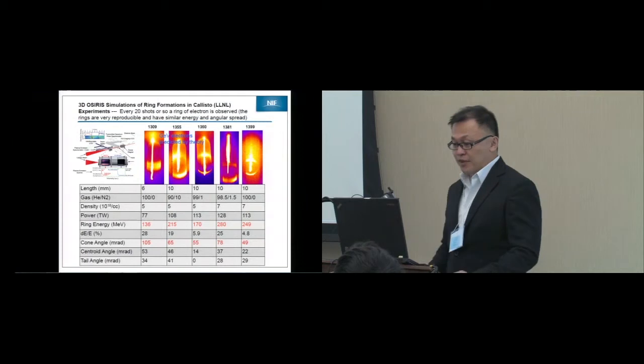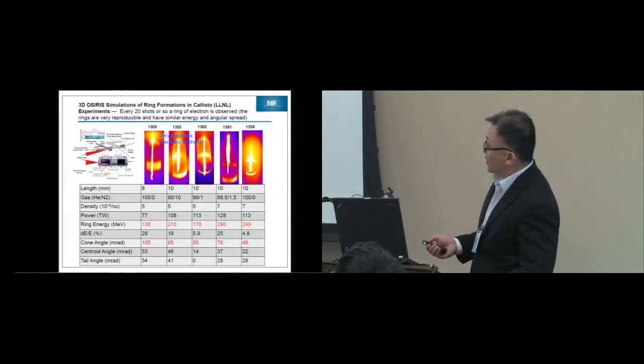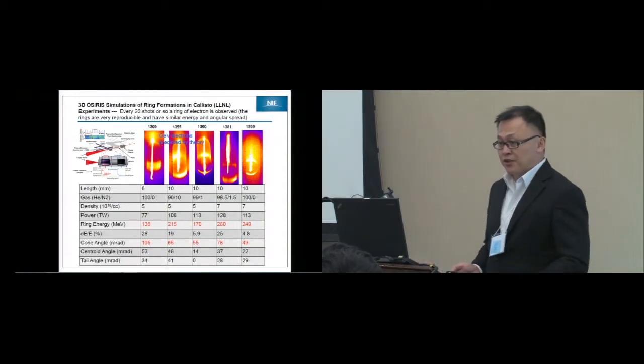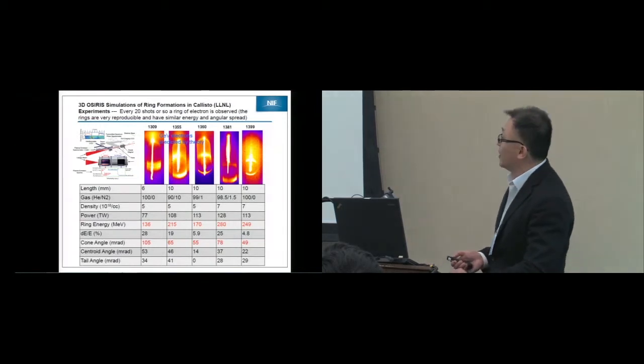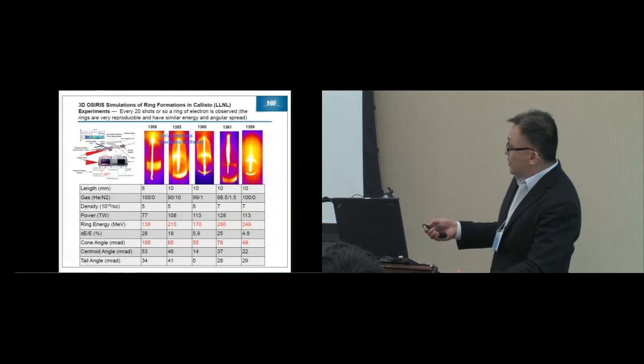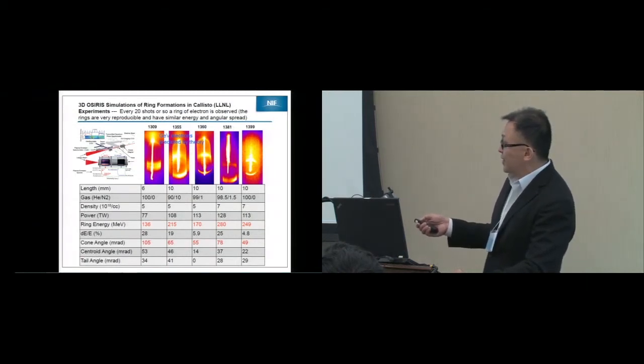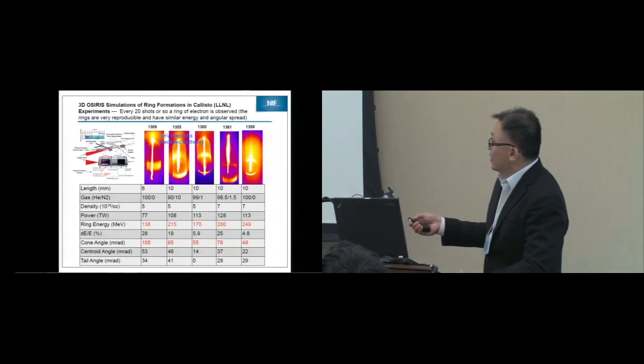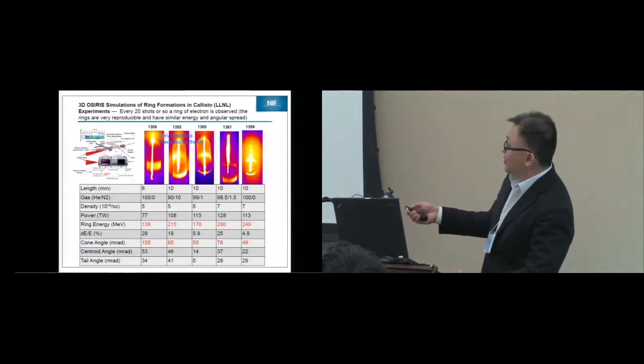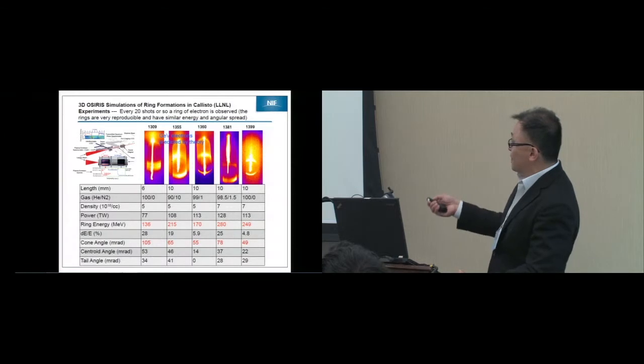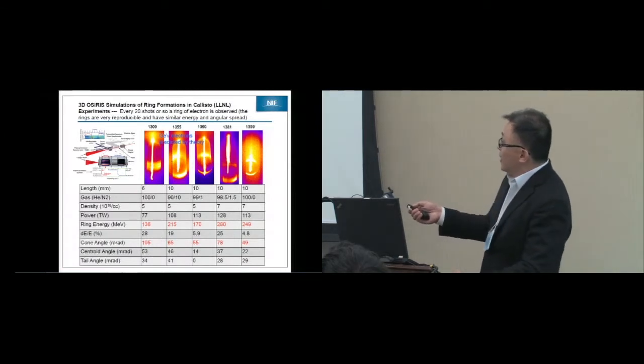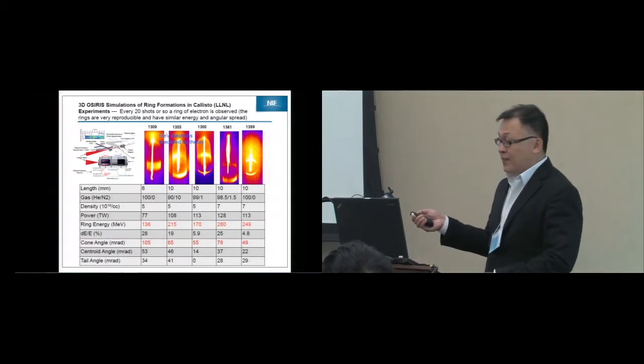I'm going to show you some recent results using a laser called the Callisto laser, one of the largest short-pulse lasers in the world. It's 200 terawatts and about 100 femtoseconds. In this experiment, it goes through a two-centimeter gas jet, and the laser energy is now converted into energetic electrons. The energetic electrons pass through a magnet, and the image is collected into a CCD camera. The energy of these energetic electrons is determined by how much the electrons are deflected by the magnet.